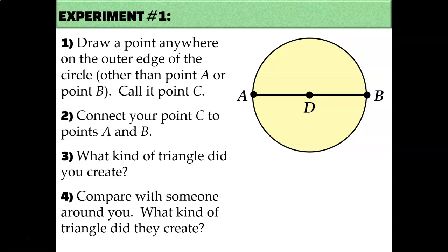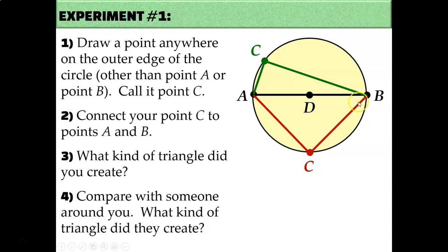Let's compare. I'm going to put point C right here. If I connect A to C and C to B, I created a triangle. Or I could have also put point C right here and connect A to C and C to B, and I get another triangle. What do you suppose is special about each of these triangles — whether it's the two I've drawn or whatever you drew on your diagram? What kind of triangles are these?